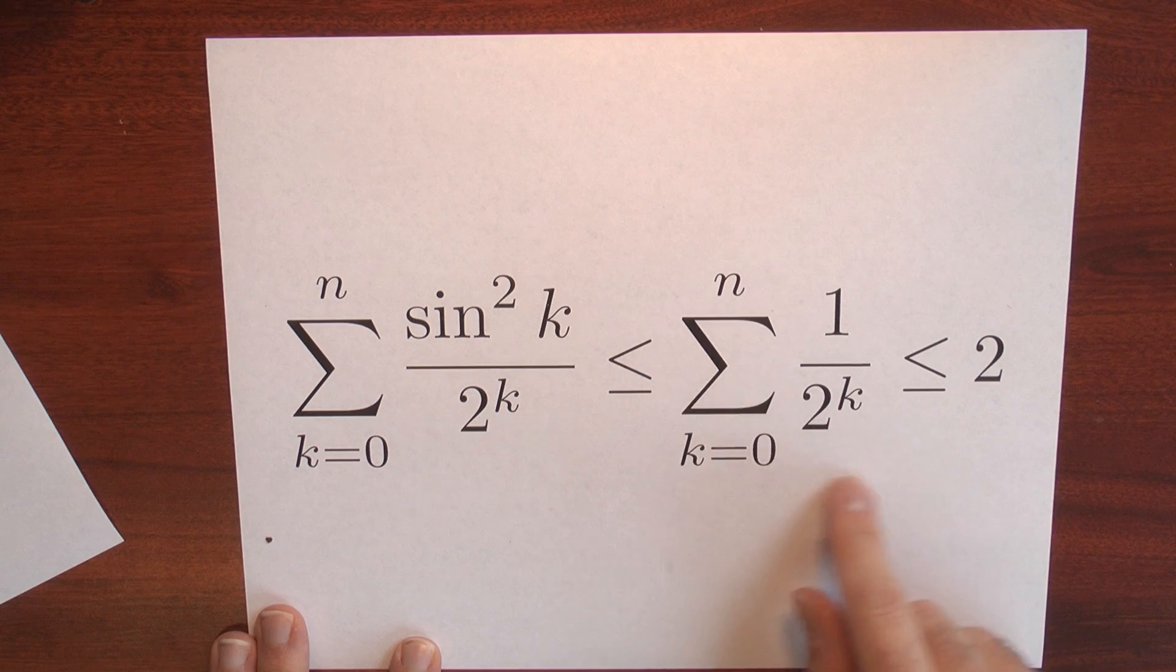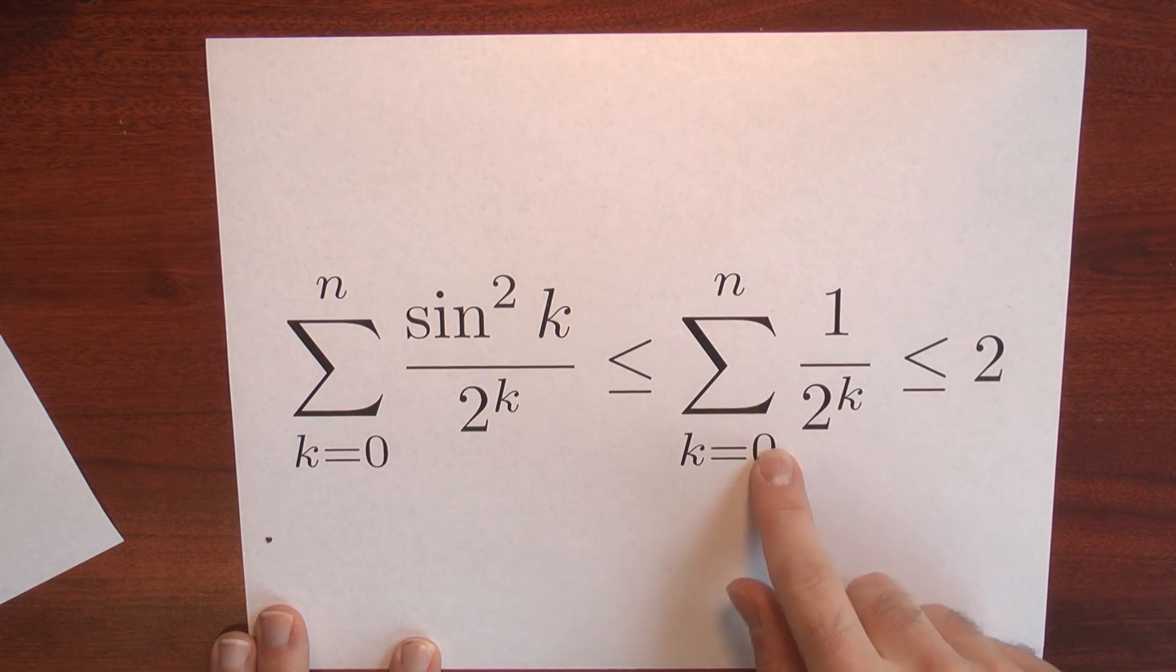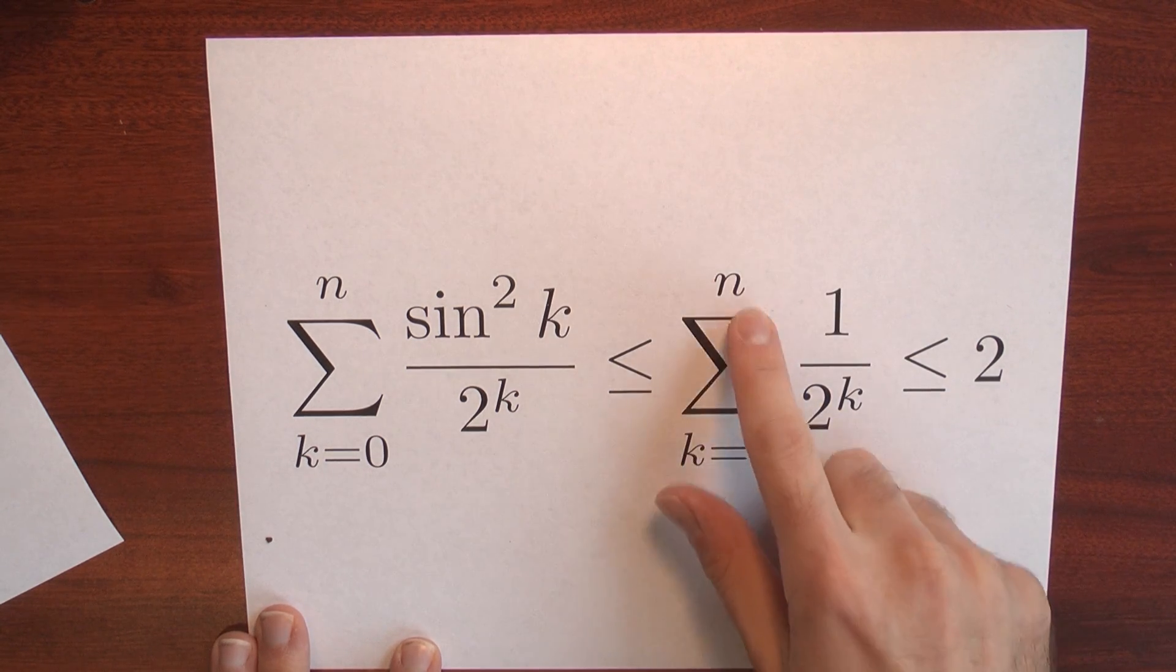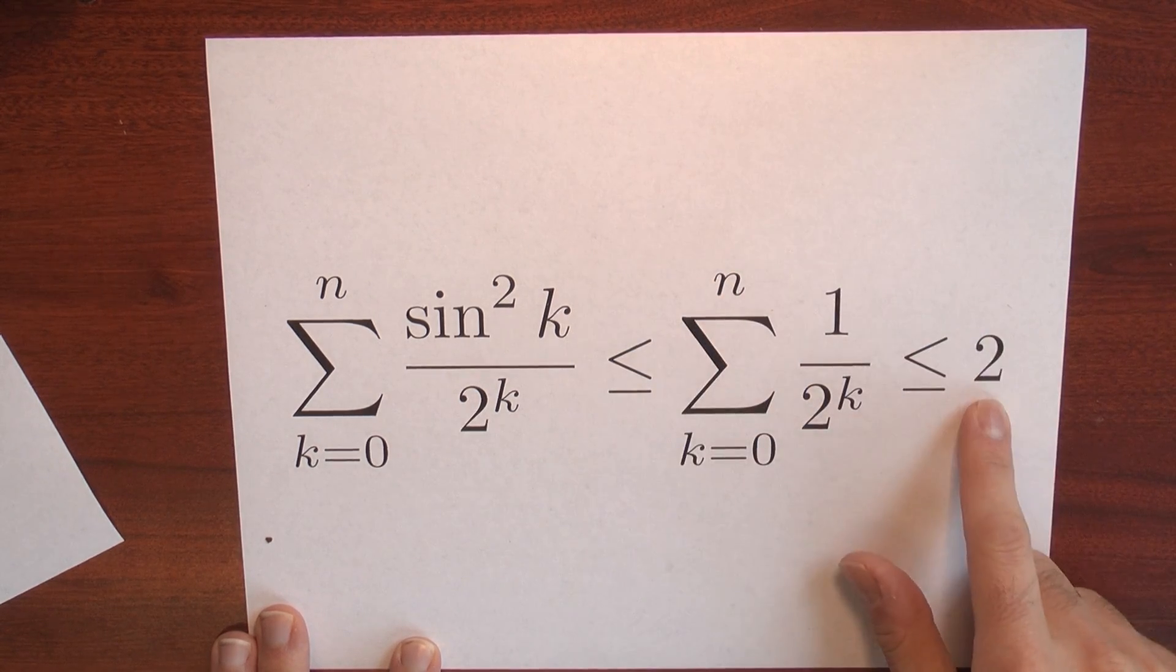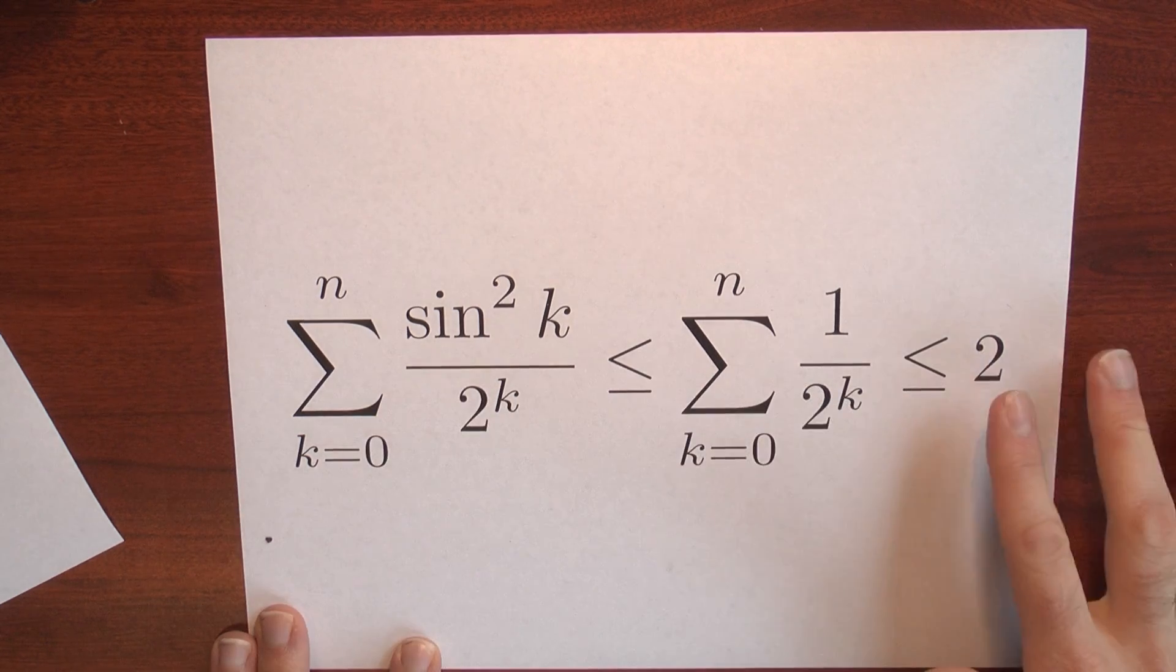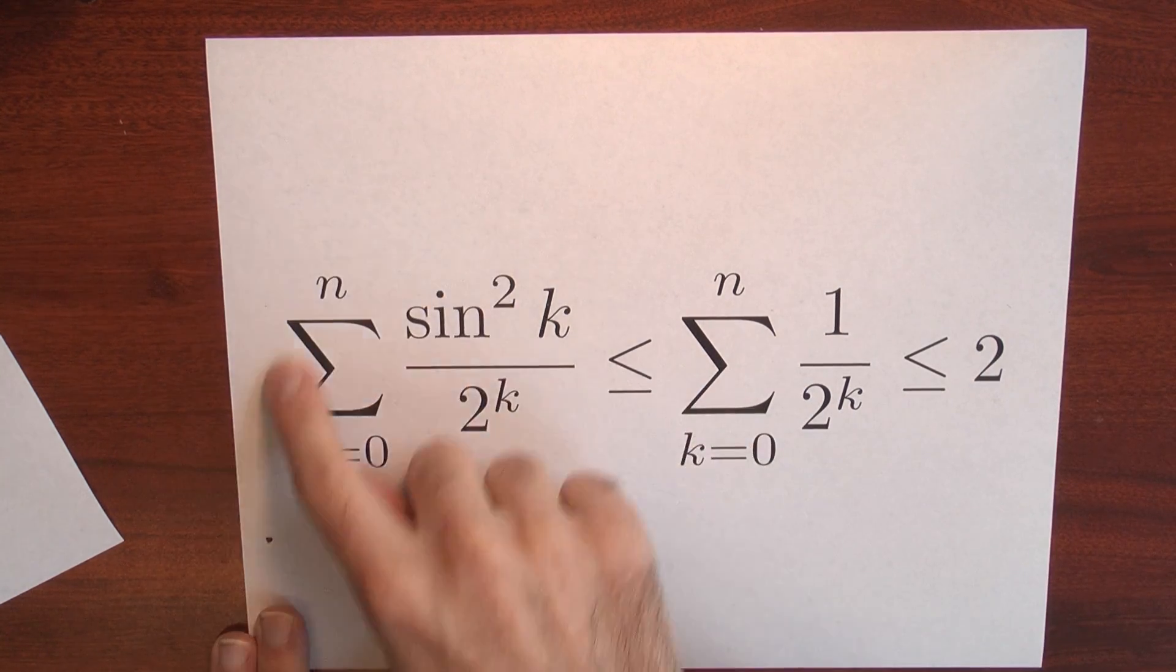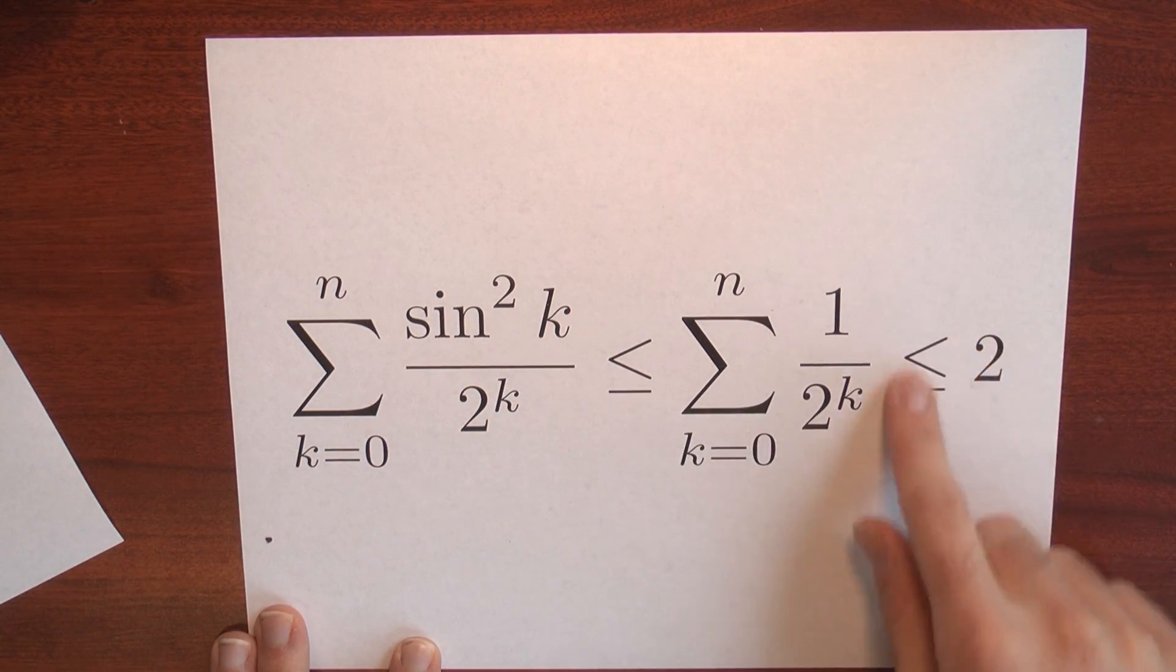But I know something else here. This is a convergent geometric series. As I let n drift off to infinity, this is approaching 2. So putting this all together, I've got that these partial sums are bounded by 2.